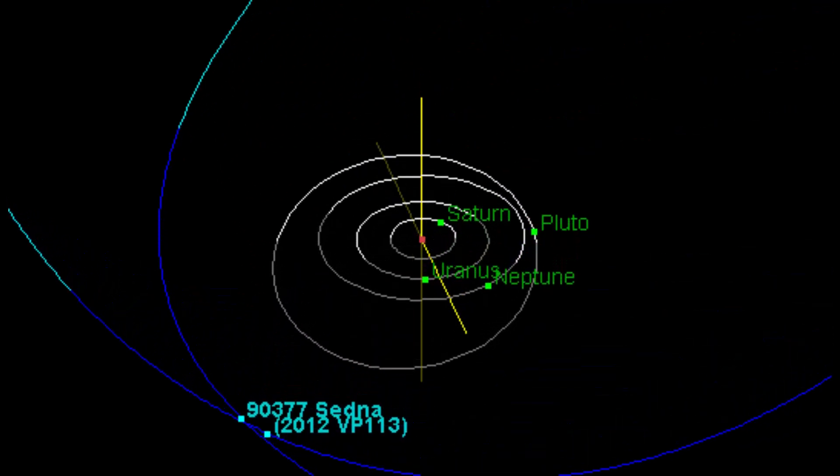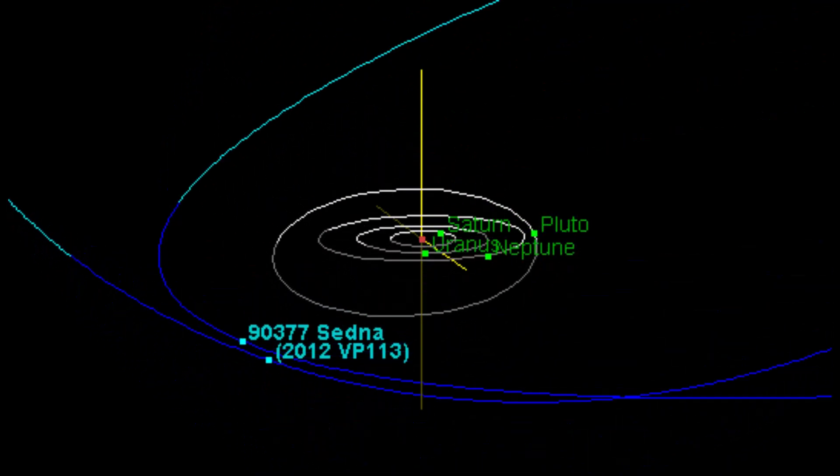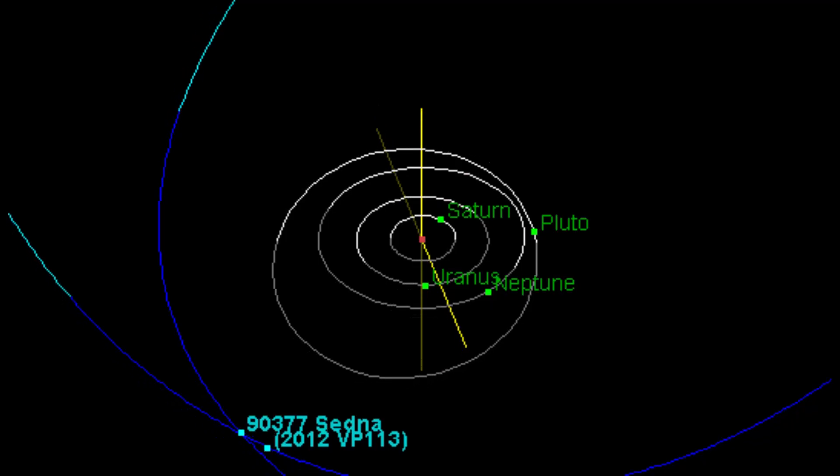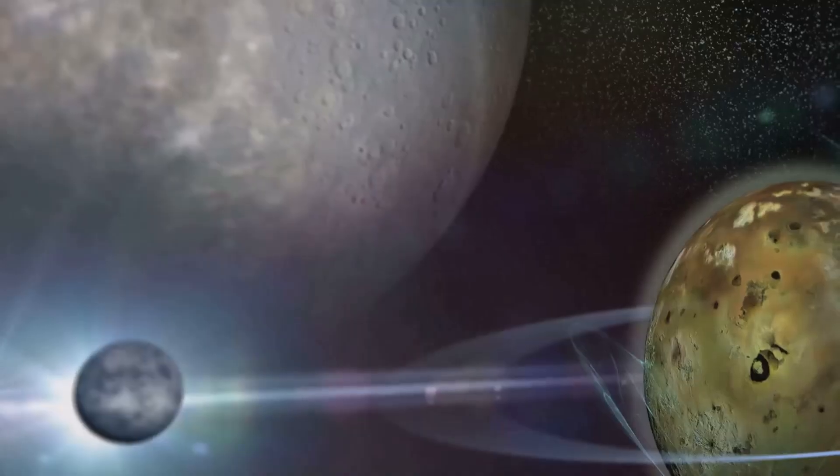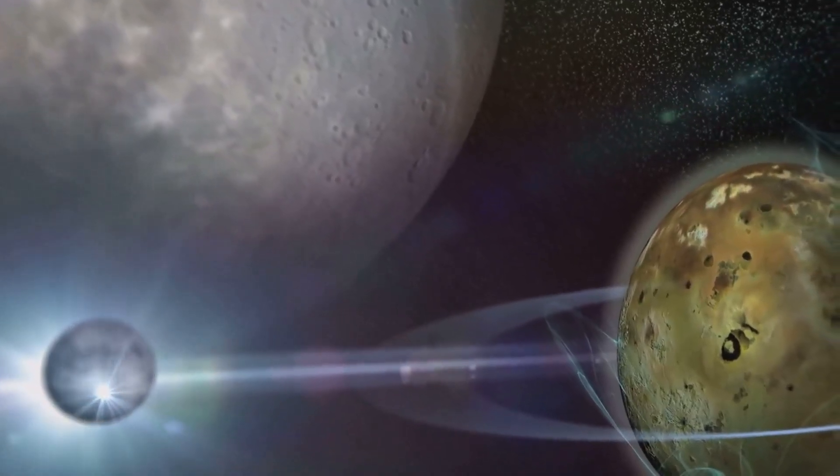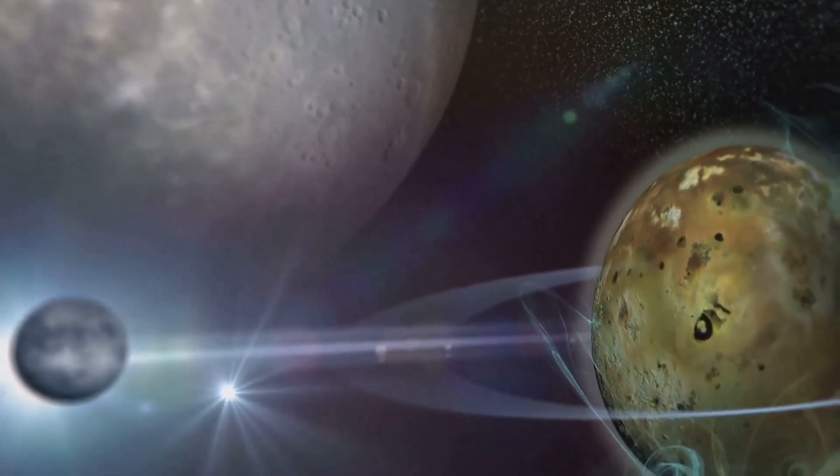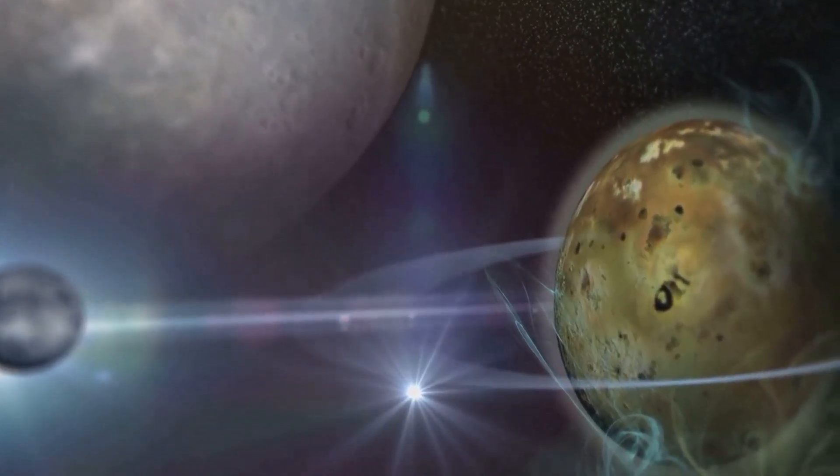Its orbit stretching far beyond the Kuiper Belt's main population. The gravitational pull of this distant, massive planet could act as an invisible shepherd, sculpting the orbits of smaller objects over millions of years.